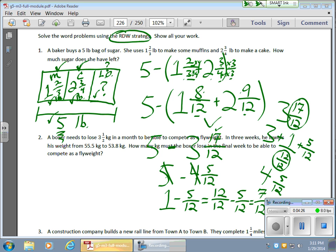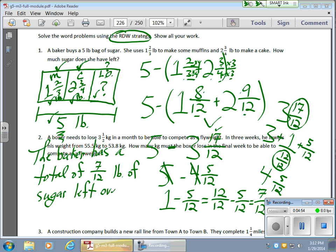That's my final answer. The baker has a total of seven twelfths pounds of sugar left over. So that's the deal. I read the question, drew out a diagram, and then wrote out my answer.